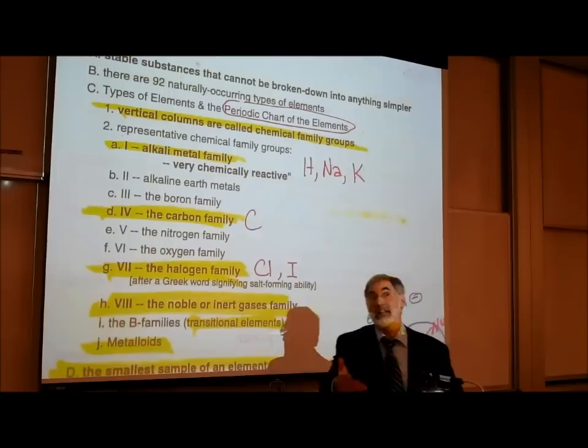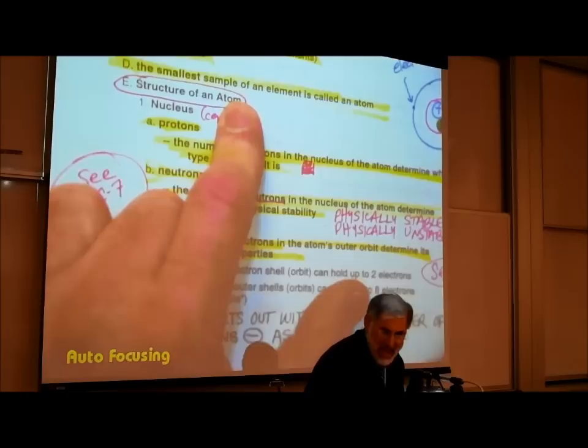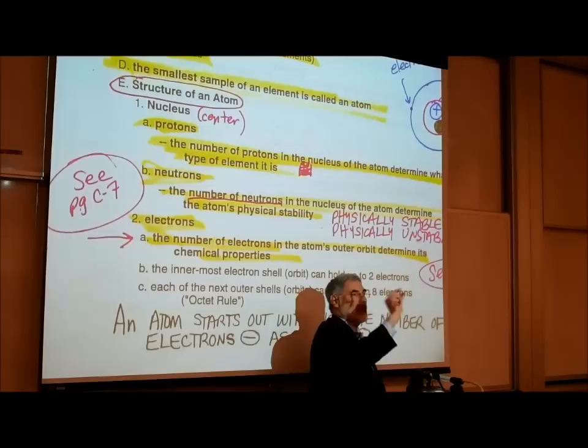If we drop down to letter D: the smallest amount of an element you can have is called a single atom of that element. In other words, you can have a single gold atom, a single uranium atom, a single carbon atom, a single oxygen atom.